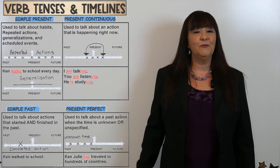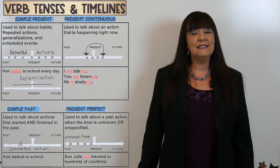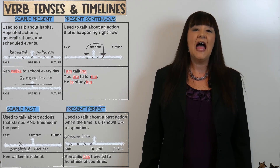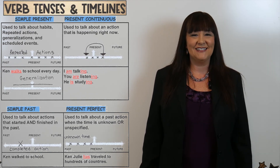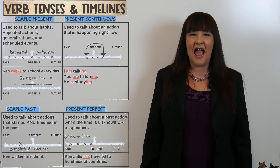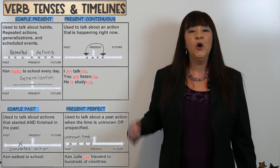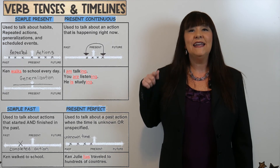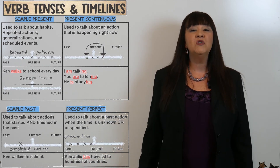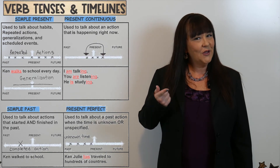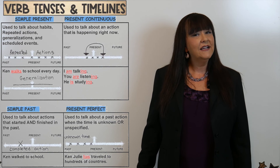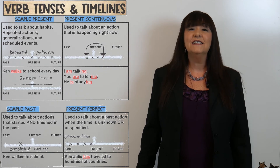The next verb tense is present continuous, or sometimes known as the progressive tense. This is the tense that talks about an action that is happening right now. For example: I am talking. You are listening. He is studying.